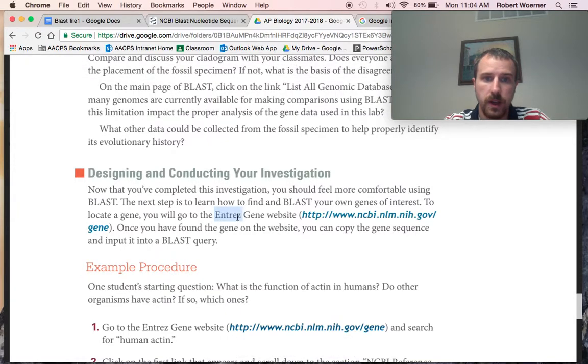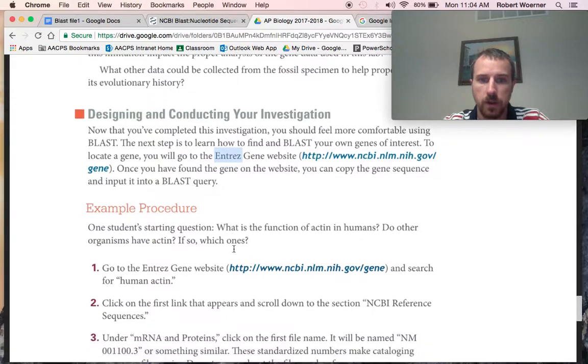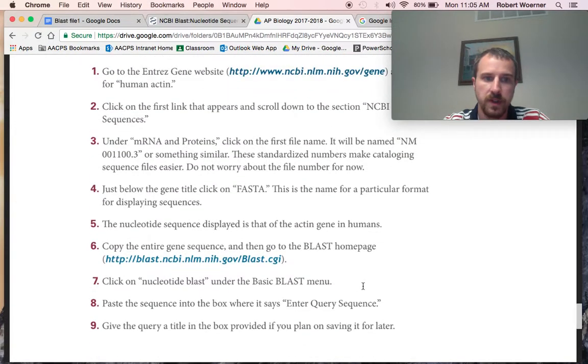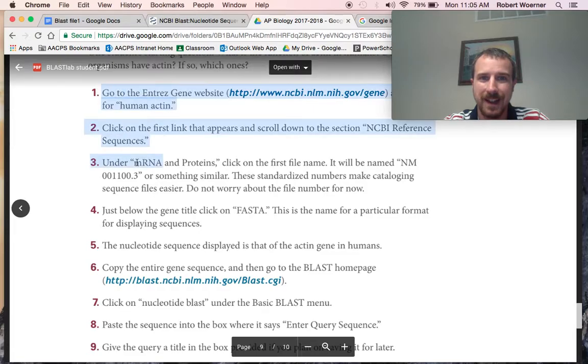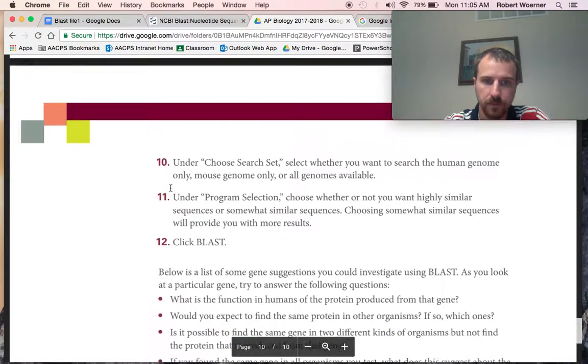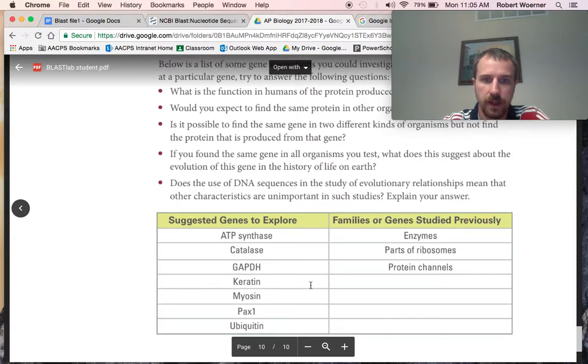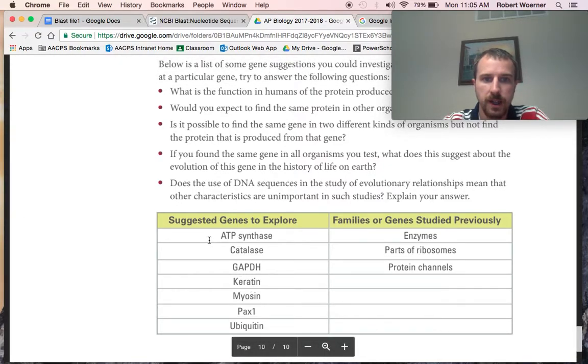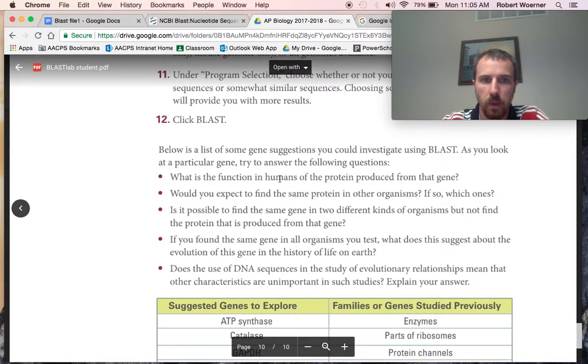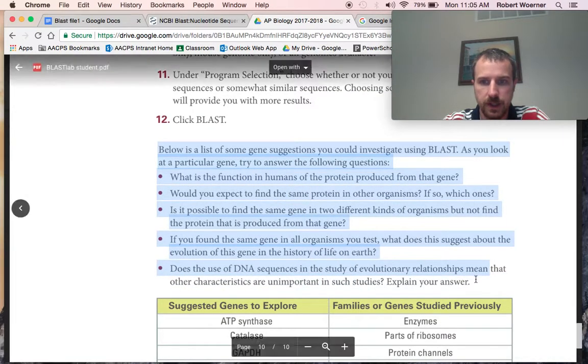On Wednesday, what I would like you to do is I'd like you to create your own investigation. So, you have to find a new gene to work with, create a procedure and work through that. This is just an example procedure. Yours does not have to look exactly like this, but I would like you to have something similar. Down here are examples of different genes you can use. I would highly suggest using one of these. Once you get all that procedure done, run it through BLAST and then answer these questions. That should be fairly easy for Wednesday.